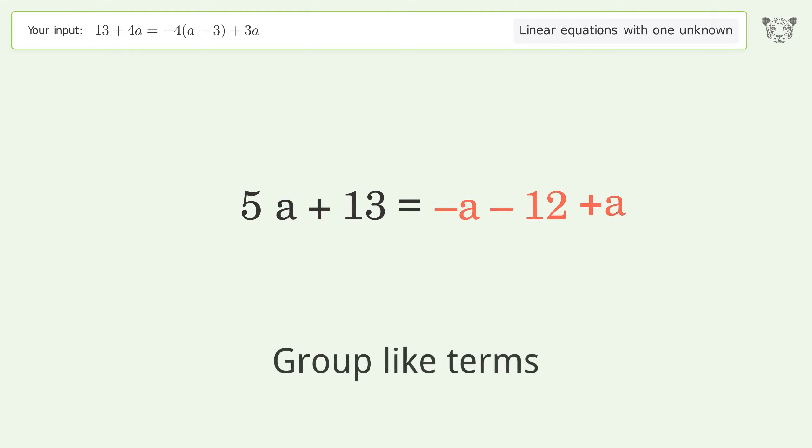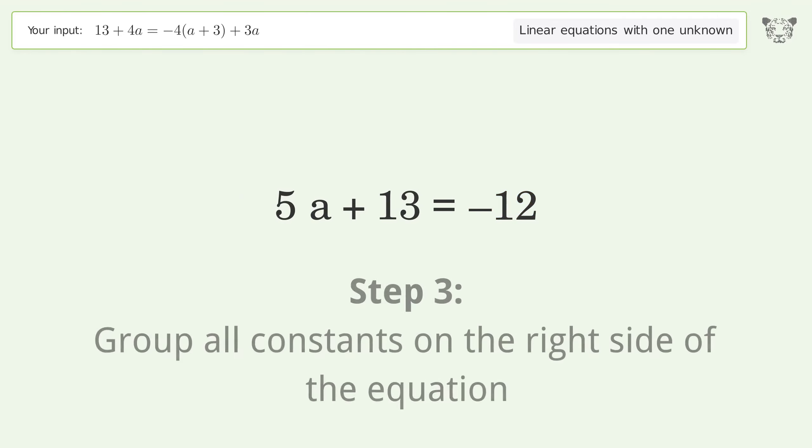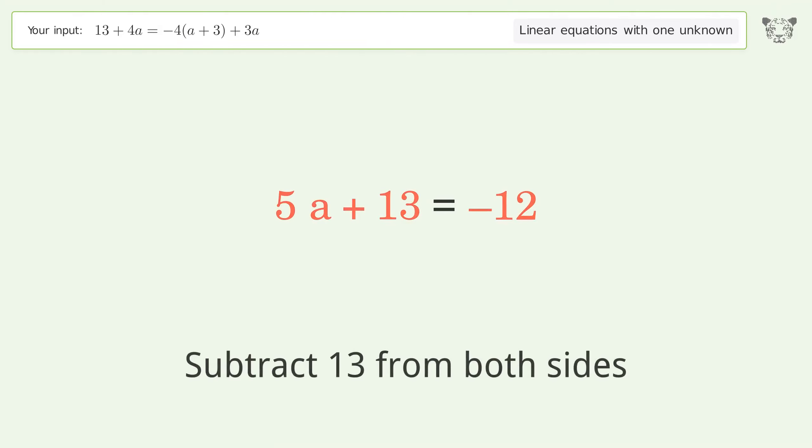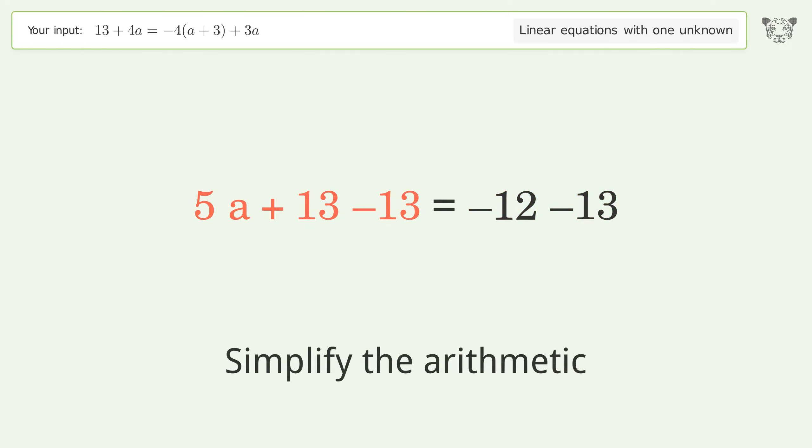Group like terms and simplify the arithmetic. Now group all constants on the right side of the equation by subtracting 13 from both sides. Simplify the arithmetic.